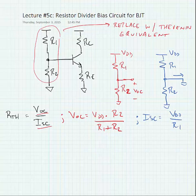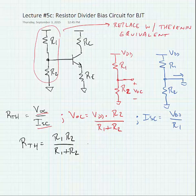Now, if we substitute VOC and ISC into our R Thevenin calculation, we'll find that R Thevenin is equal to R1 times R2 over the sum of the resistances. In other words, it's equal to R1 in parallel with R2.